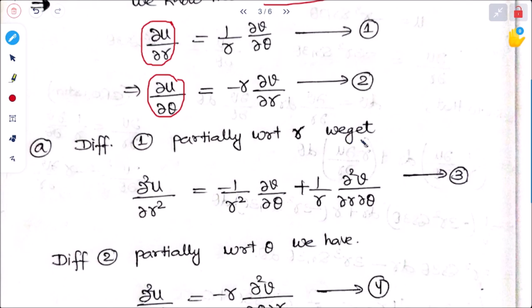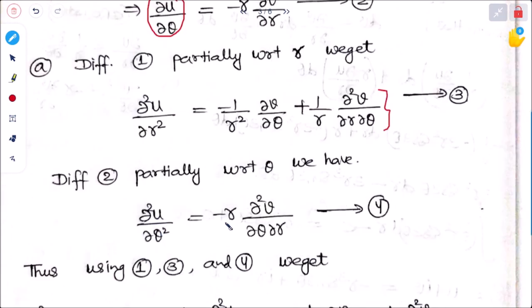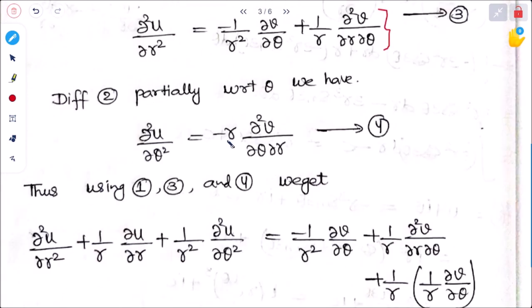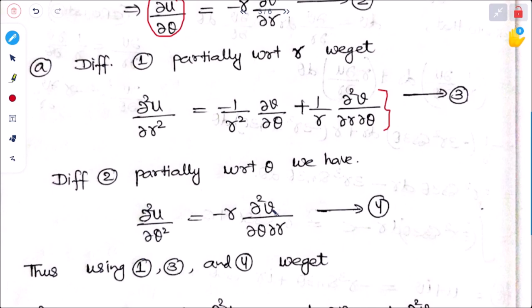Differentiating the first C-R equation with respect to r using the product rule: ∂²u/∂r² = minus(1/r²)(∂v/∂θ) + (1/r)(∂²v/∂r∂θ). Differentiating the second equation with respect to θ: ∂²u/∂θ² = minus r(∂²v/∂θ∂r). This is straightforward partial differentiation giving us equations 3 and 4.